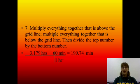Multiply everything together that's below the grid line, and then you're going to divide. You have the numerator divided by the denominator. So, you're going to divide the top number by the bottom number. So, we have 3.179, the hours cancels out, times 60. And we're going to get 190.74 minutes. And it looks like my little grid line is off a little bit, but I'm not going to go back and fix it right now.